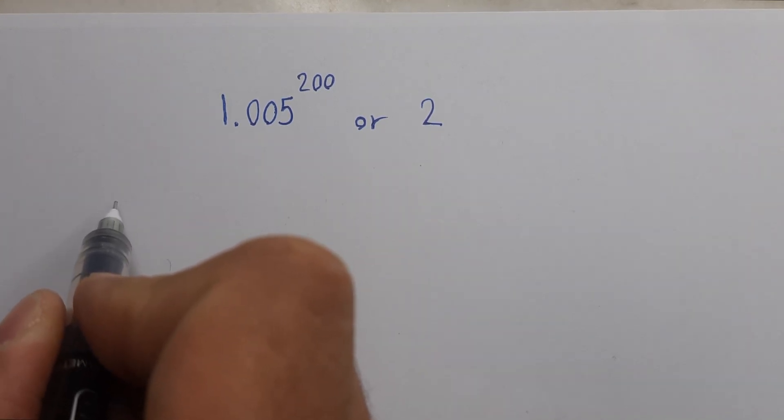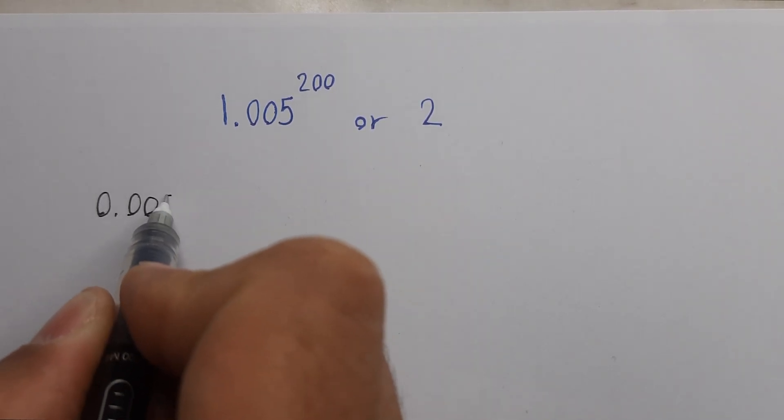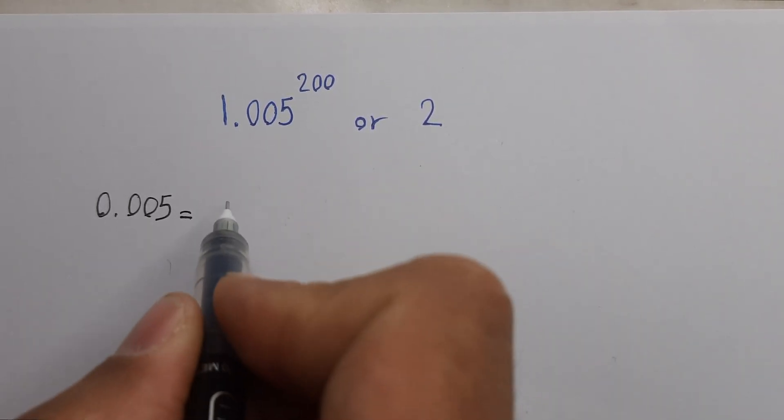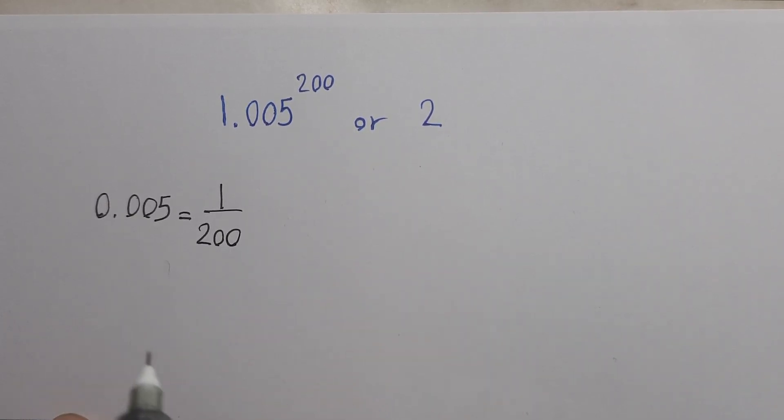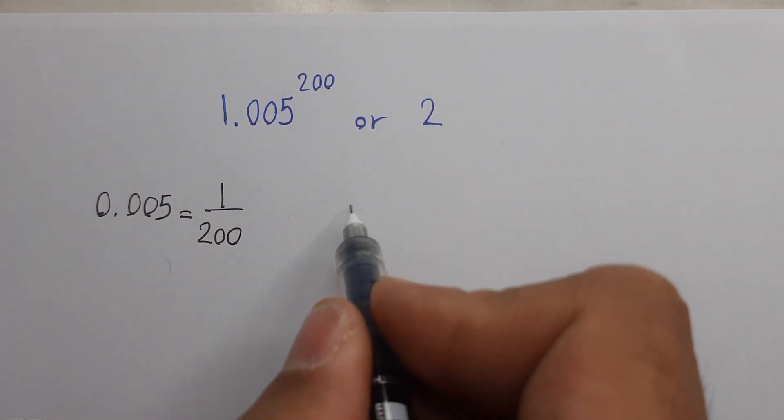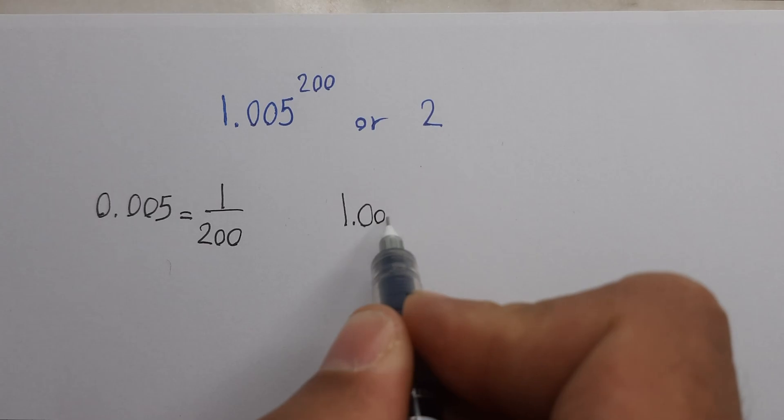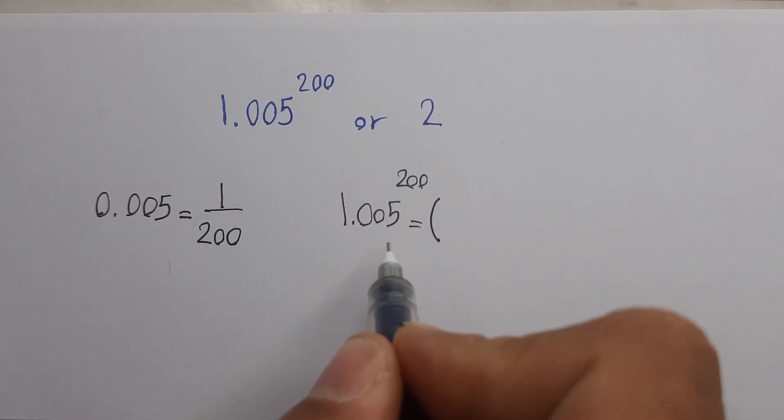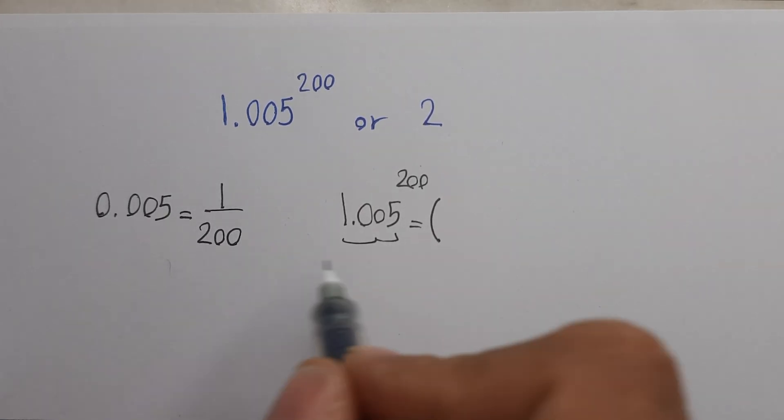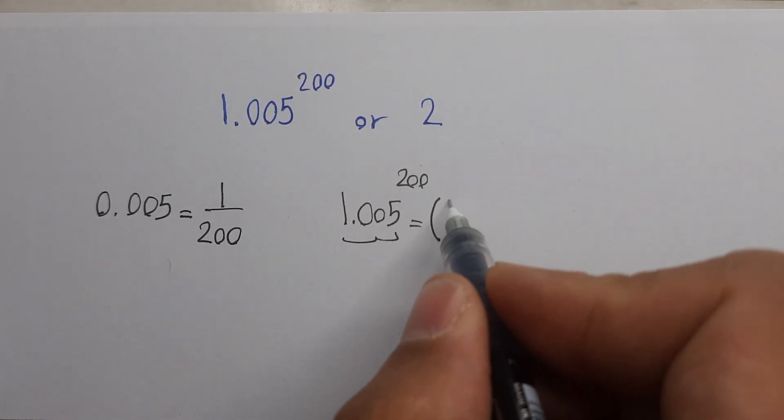Let's go. 0.005 equals 1/200, so 1.005^200 equals (1 + 1/200)^200.